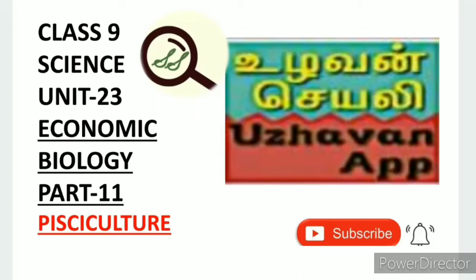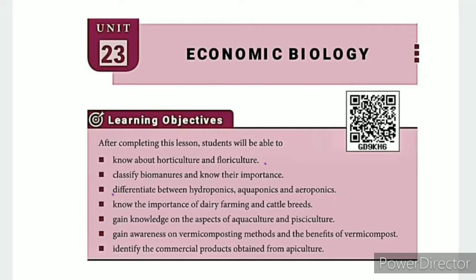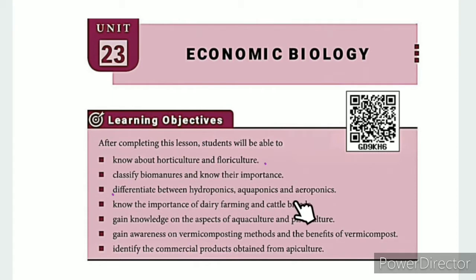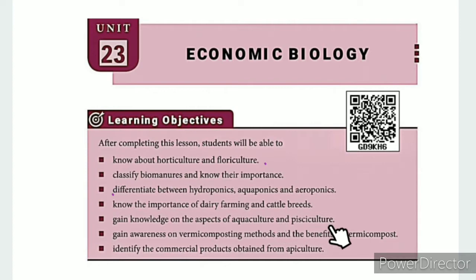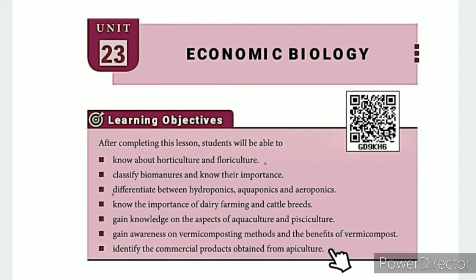Greetings from SS Class 9 Science Unit 23 Economic Biology Part 11, Pisciculture. The learning objectives are: know about horticulture and floriculture; classify bio-manures and know their importance; differentiate between hydroponics, aquaponics and aeroponics; know the importance of dairy farming and cattle breeds; gain knowledge on the aspects of aquaculture and pisciculture; and gain awareness on vermicomposting methods and the benefits of vermicompost.